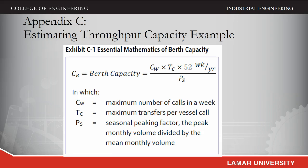Seasonal peaking is a ratio of peak to mean month of vessel throughput. For cargo terminals, the maximum number of calls in a week is based on berth utilization, crane productivity, crane assignment, and unproductive time. Berth utilization is limited by the need to allocate berth length in increments sufficient to accommodate variable vessel lengths, and by the need to assume that a berth space is available when a vessel calls, even if its arrival time is somewhat random. Given these constraints, the full gross capacity of a berth is never used.